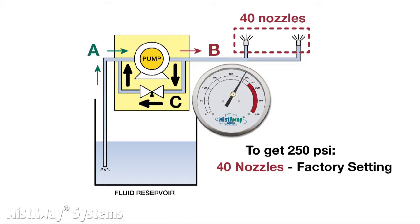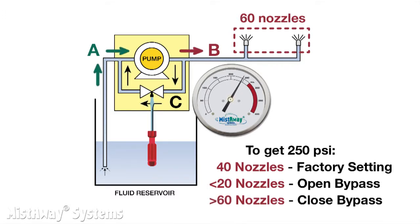The factory setting is for the pump to generate about 250 psi when connected to a standard 40 nozzle circuit. Remember, by 250 psi we're talking about the pressure at the unit, not downstream in the nozzle circuit. If the size of your nozzle circuit is small, say 20 nozzles or less, you'll need to open the bypass to get the pressure at the pump to read 250 psi. If you have, say, 60 nozzles or more, you'll need to close it to get to 250 psi.